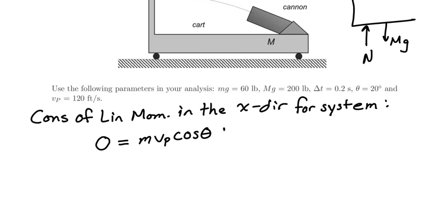But we also know then that this would equal the mass of the cannon cart system, plus whatever velocity it has in the x direction at this instant. Which means that the velocity of the cart in the x direction, given here in terms of speed, would simply be equal to minus m times vp times the cosine of the angle theta, divided by the mass of the cart cannon system, capital M.